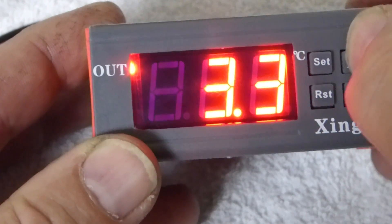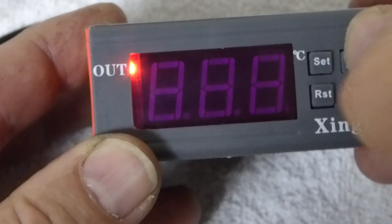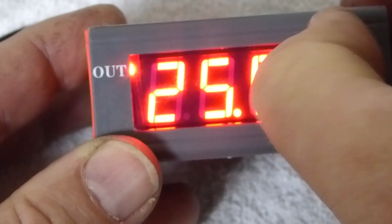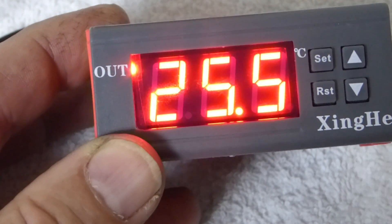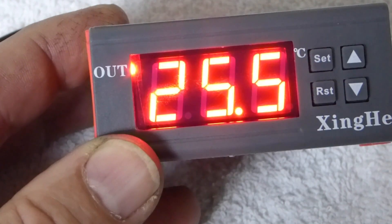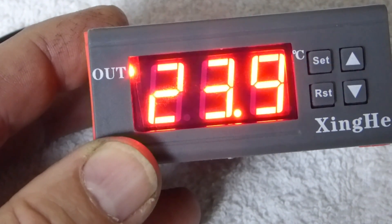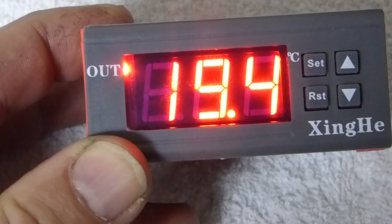So we'll put that to 4 degrees and press the set button. Now if I put the probe in the water, the temperature will go down. You can see the LED on the top left hand corner.